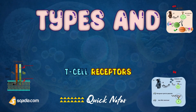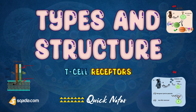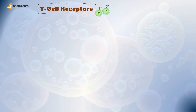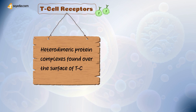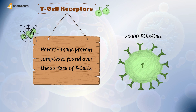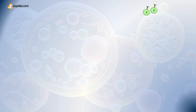What are TCRs? T-cell receptors are the heterodimeric protein complexes that are found over the surface of T-cells. Their primary role is the recognition of foreign antigen. A typical T-cell may have as many as 20,000 receptor molecules on its membrane surface, all of either the alpha-beta or gamma-delta type.